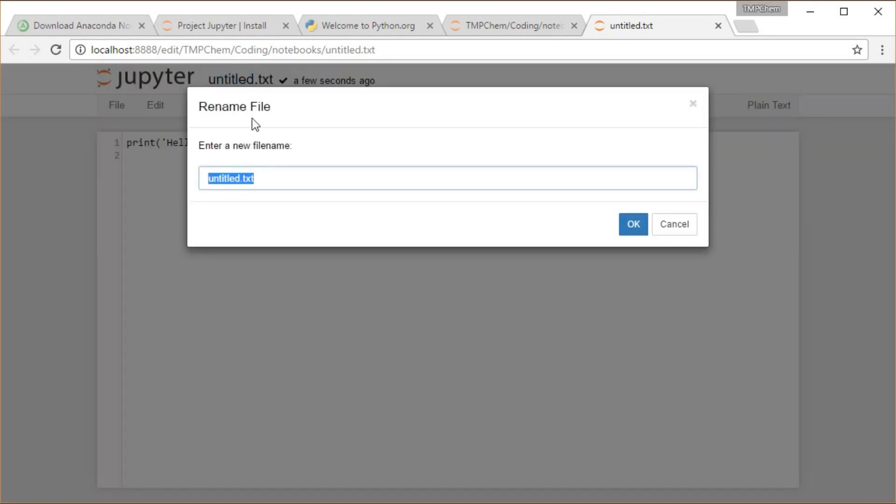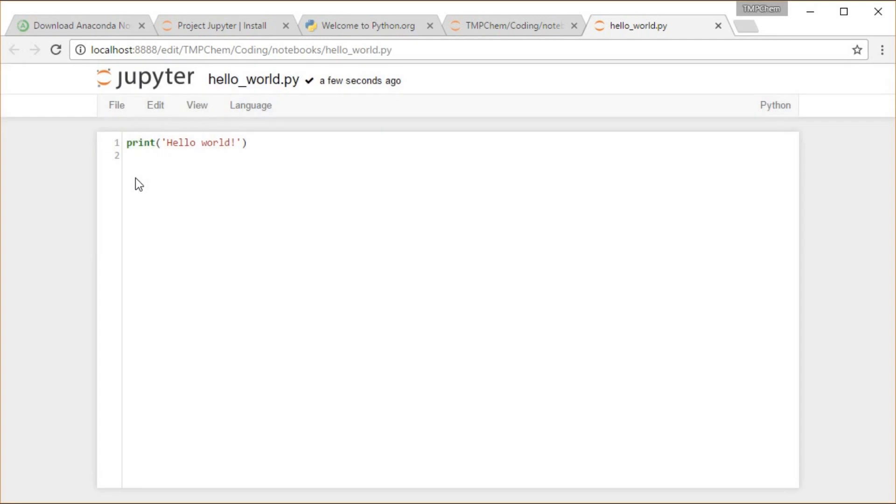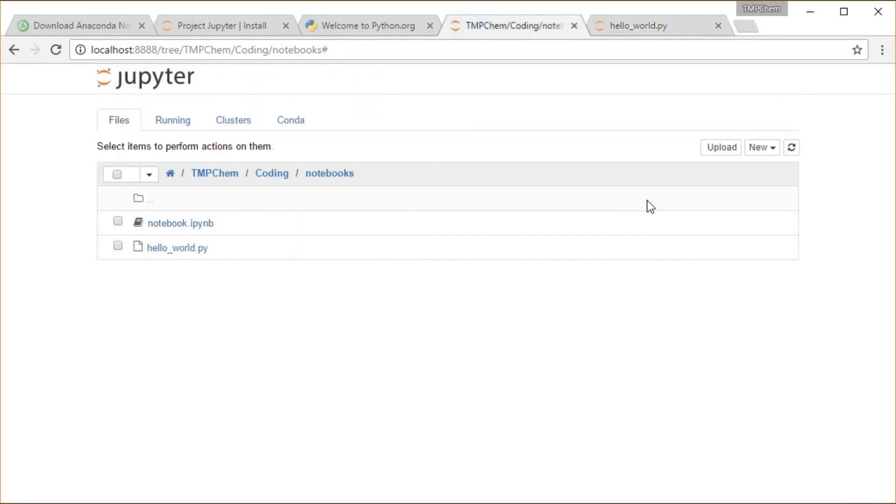So I have this. I'm going to change the file, the name of this file to HelloWorld.py. Save that. Now it's renamed. So if I go up into this directory and I kind of refresh that, now I have my HelloWorld.py going on there.